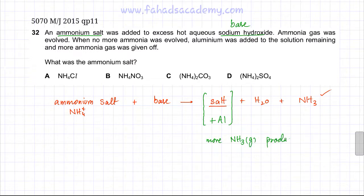We need to figure out what this salt is. The first thing I know is that it does contain ammonium ions because it is an ammonium salt. Four options are given. According to this, all four would be correct, but what salt would produce more ammonia gas when aluminium is added?